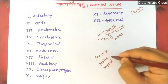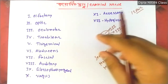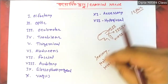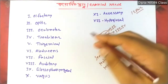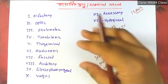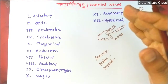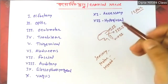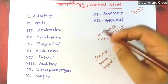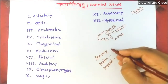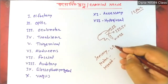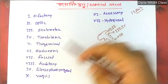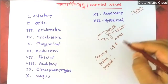What do sensory and motor mean? The sensory nerves are those that carry sensory information. The sensory cranial nerves are 3 in number: 1, 2, and 8. That is: 1 is Olfactory, 2 is Optic, and 8 is Auditory. So cranial nerves 1, 2, 8 are purely sensory.